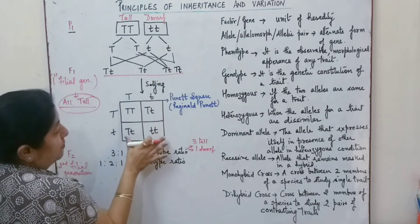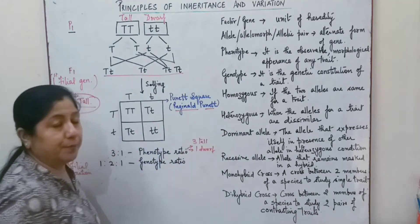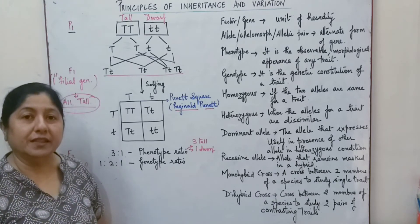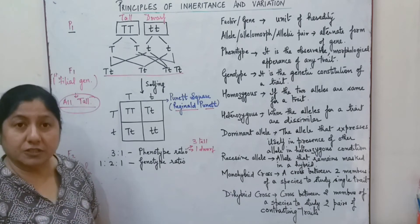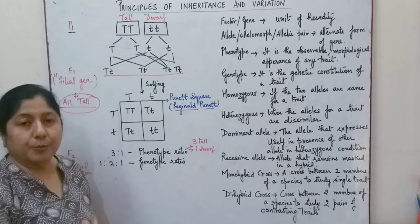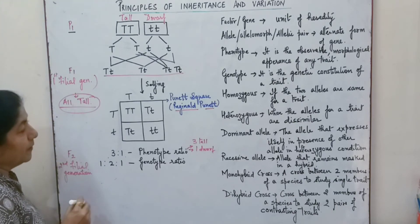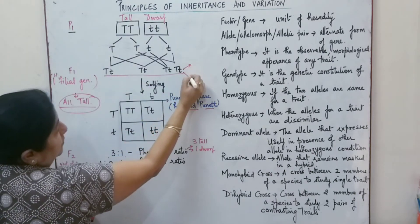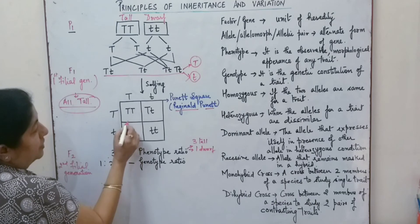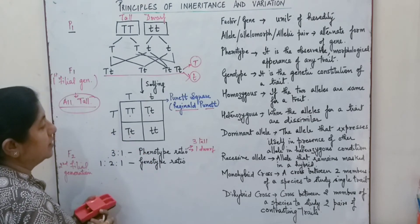Here we have made a square known as a Punnett square, developed by Reginald Punnett. It is a graphical representation used to obtain the genetic combinations that are possible. The Punnett square is very helpful in understanding and formulating combinations to obtain various phenotypes. The gametes separate out and the combinations give us one tall, second tall, third tall, and the fourth one is a dwarf.